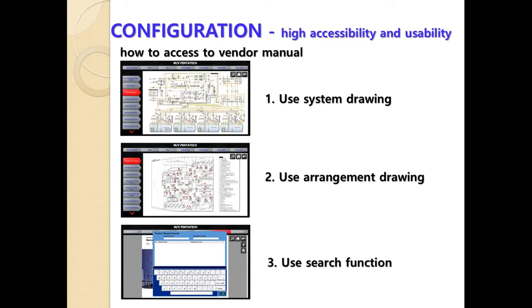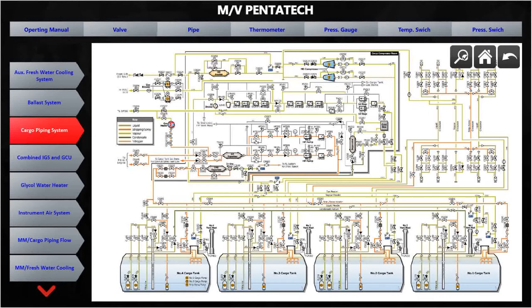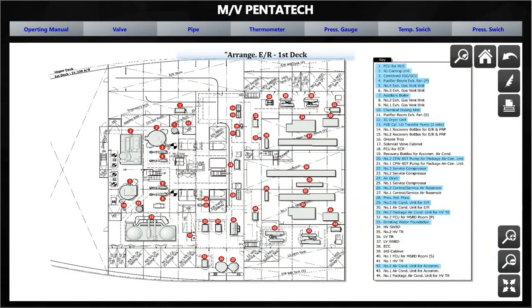TSEbook has three methods to access any vendor manual easily and quickly. The first method is using system drawing, the second is using arrangement drawing, and the third is using the search function. The system drawing shows various devices connected to the system, where you can locate the equipment you are looking for in the e-book. When you select any equipment on the drawing, you can see the vendor manual on the e-book screen.